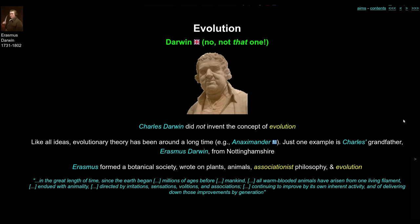Erasmus Darwin, who coincidentally was born in Nottinghamshire, also had thoughts on evolution. During his life, Erasmus formed a botanical society, wrote about plants and animals, was strongly influenced by the British Associationist School of Philosophy, and also wrote on evolution.